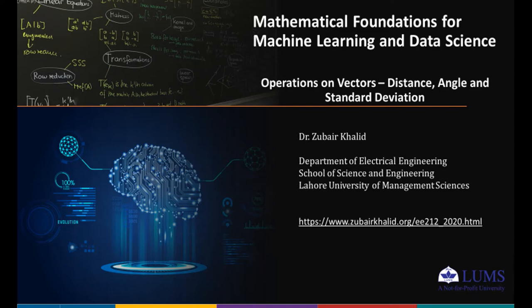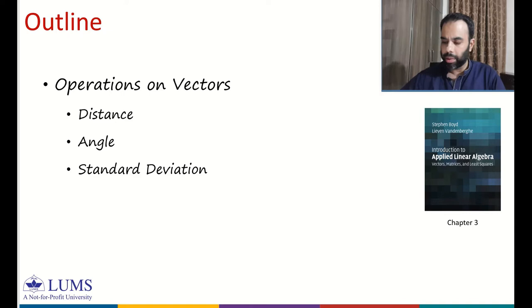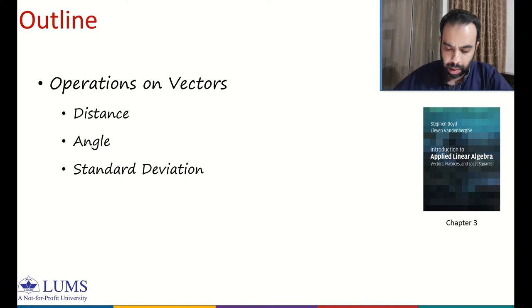In this course module we will continue our discussion on operations on vectors. We will talk about distance, angle, and standard deviation — distance between two vectors, angle between two vectors, and standard deviation of a vector. You can review more material in chapter 3 of reference one.